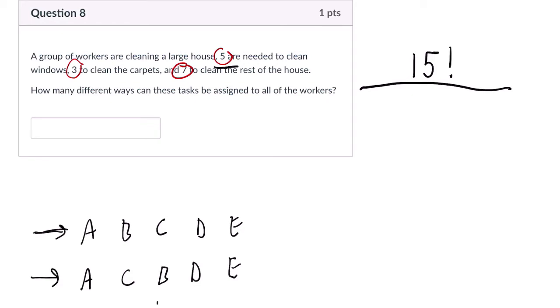So these orders, essentially, this one and this one and every other way that I could pick those five people are irrelevant. They're not different. They're indistinguishable. How many different ways can I pick those five people? Five factorial ways for the windows, and they're all indistinguishable. So I want to divide by five factorial.